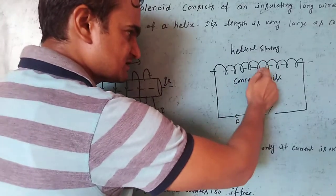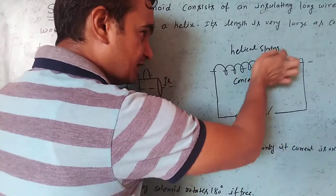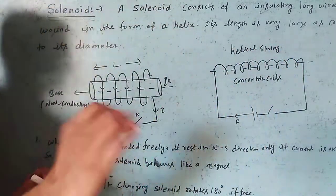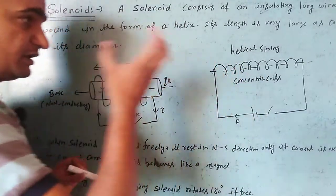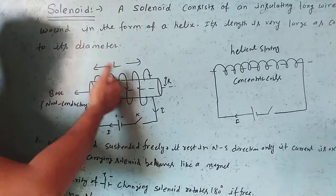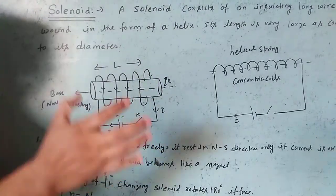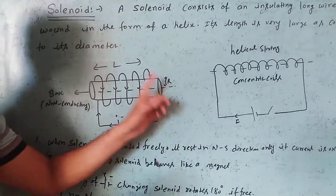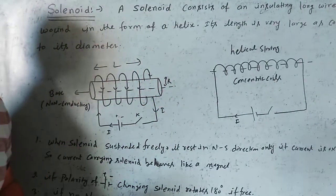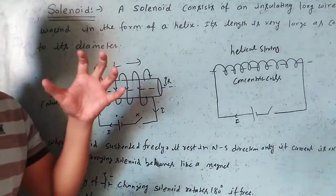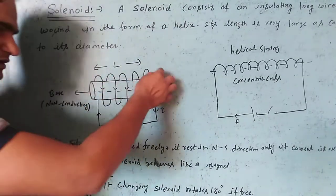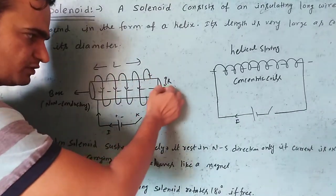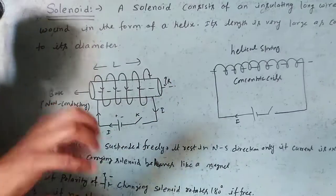The form is like helical springs. The length of this solenoid is very large compared to the radius or diameter of the loop.